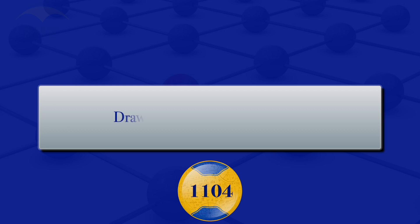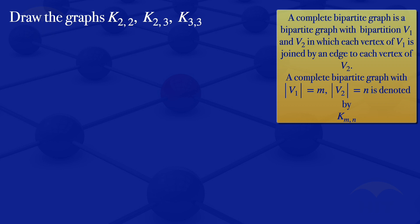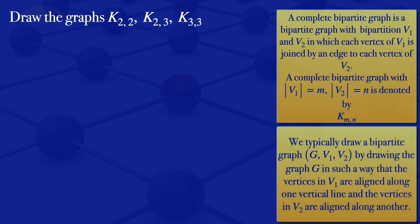In this video I am going to draw the complete bipartite graphs K2,2, K2,3, and K3,3. A complete bipartite graph is a bipartite graph with bipartition V1 and V2 in which each vertex of V1 is joined by an edge to each vertex of V2. A complete bipartite graph is denoted by K(m,n). We typically draw a bipartite graph by aligning the vertices in V1 along one vertical line and the vertices in V2 along another line.